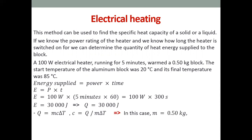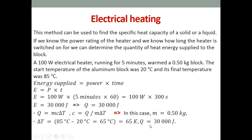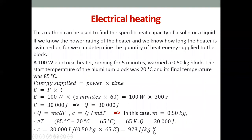The second step is to find the specific heat capacity. We need the energy (30,000 J), the mass (0.5 kg), and the change in temperature. ∆T = 85 − 20 = 65°C. When we calculate, we find the specific heat capacity as approximately 923 J/kg·K.